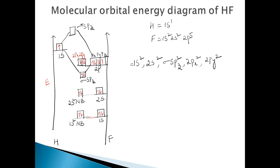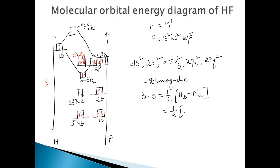Since there are no unpaired electrons and all orbitals are filled, HF is diamagnetic in nature. It is also colorless because there is no unpaired electron, and the molecule is stable. The bond order equals half times (number of bonding electrons minus number of antibonding electrons). Only the sigma SPZ orbital is bonding with 2 electrons, and there are no electrons in the antibonding orbital, so bond order = ½ × (2 − 0) = 1. A bond order of 1 confirms the molecule is stable and does exist. Since there are no unpaired electrons, it is diamagnetic and colorless.